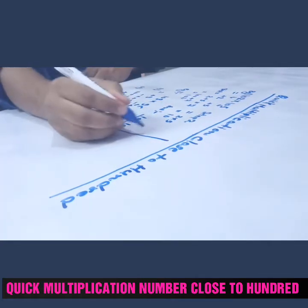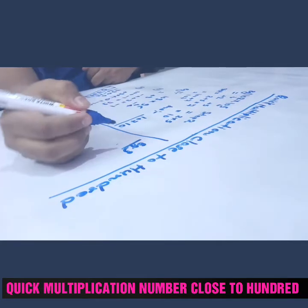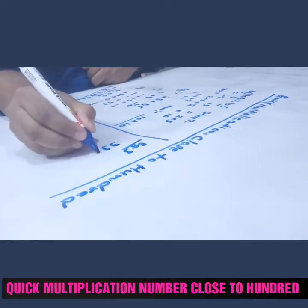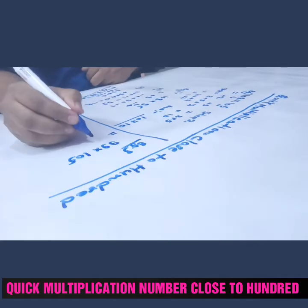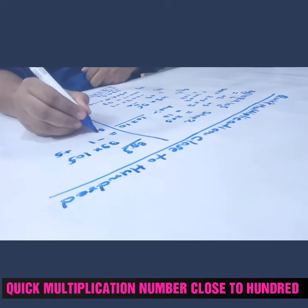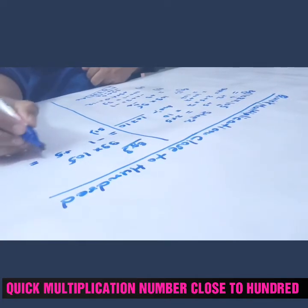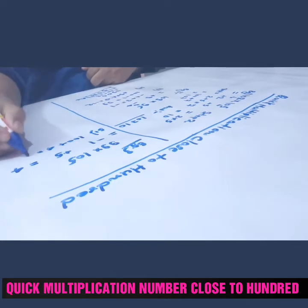I will take one more example. Suppose I have to multiply 99 into 105, so this is how much less than 100? Minus 1. This is how much greater than 100? Plus 5. So step 1, this one become 5 minus 1 is 4, so 100 plus 4, how much? 104.